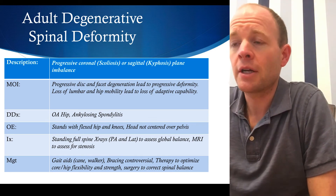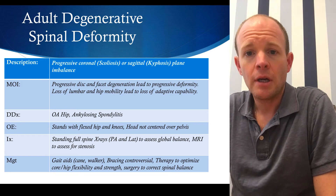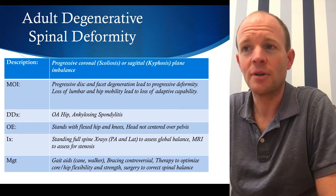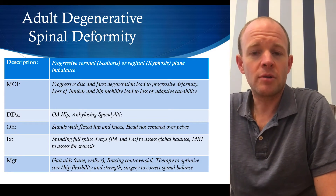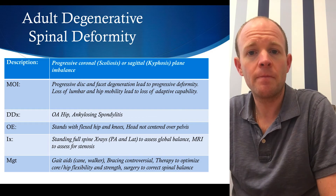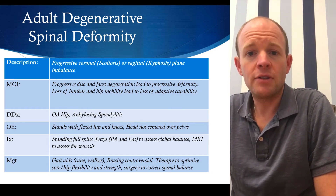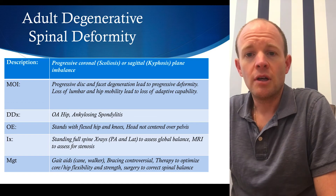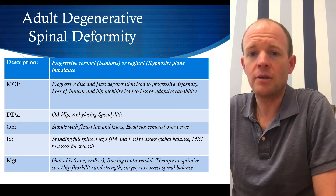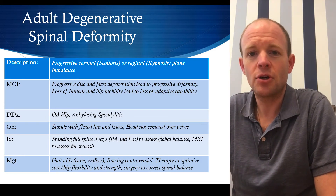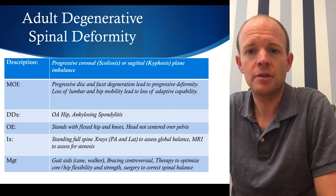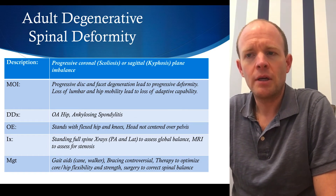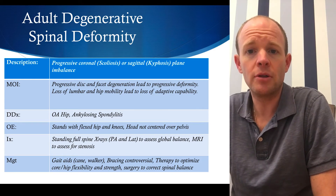Adult spinal deformity is the next topic — it's a very large topic I could spend easily over an hour on, and it only gets two slides. It's all about balance: having the head balanced over the pelvis. Life is a kyphosing event — as the discs and facets degenerate, the head tilts forward. Combine that with some hip arthritis and the patient's compensatory mechanisms get worse and worse. It's important to assess where the patient is having pain, where they may be weak, and whether they have any neurogenic claudication or radiculopathy.